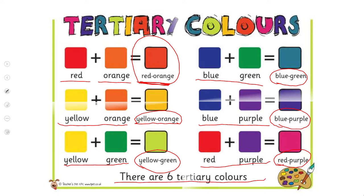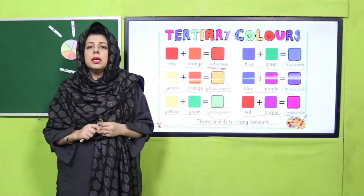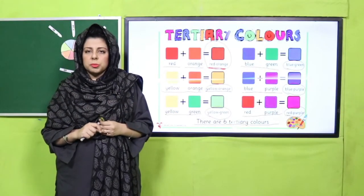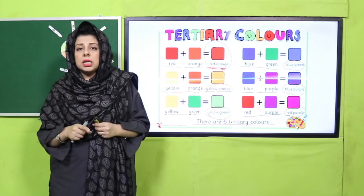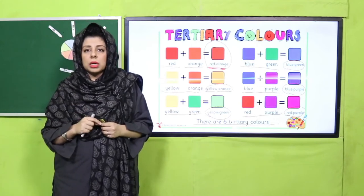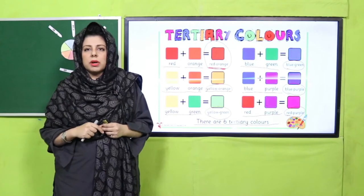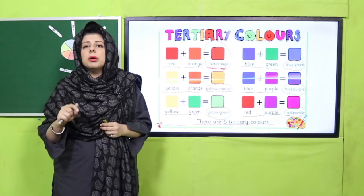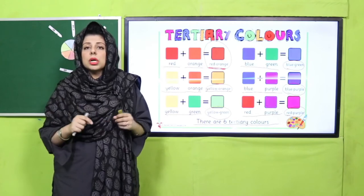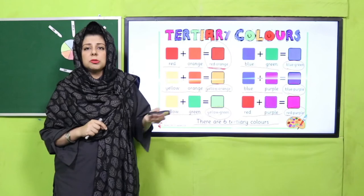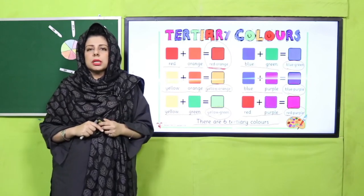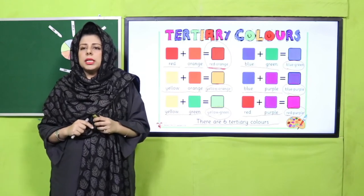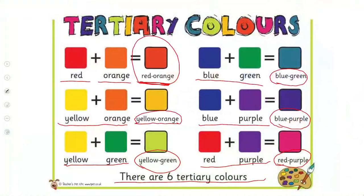So now there are six tertiary colors. How many? Six tertiary colors. So teachers, aisa poster colorful sa bana ke classroom mein display karein taaki bachon ko in ki recognition ho sake. Aur especially jab aap koi hunt karwa rahe hon color ka - agar aap purple color search karwa rahe hain ya red-purple color search karwa rahe hain - toh unka class mein poster ka display hona bohot zaroori hai taaki bachon ke saath color code ko match kar sake. So let's see what I have next for you.